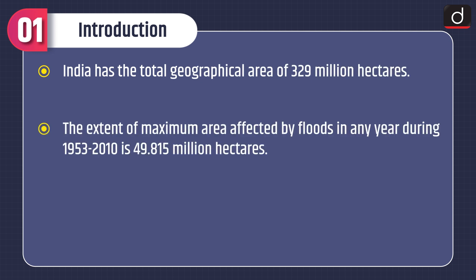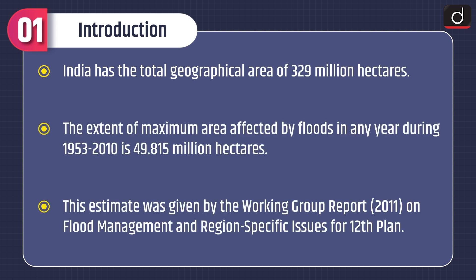India has a total geographical area of 329 million hectares. The maximum area affected by floods in any year during 1953 to 2010 is 49.815 million hectares. This estimate was given by the Working Group Report 2011 on flood management and region-specific issues for the 12th Plan.